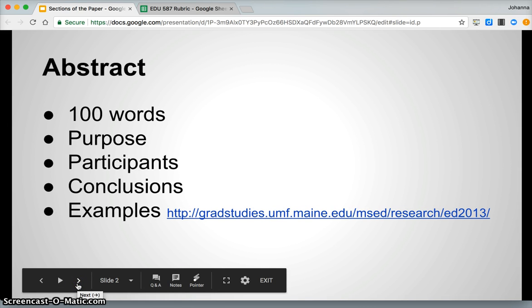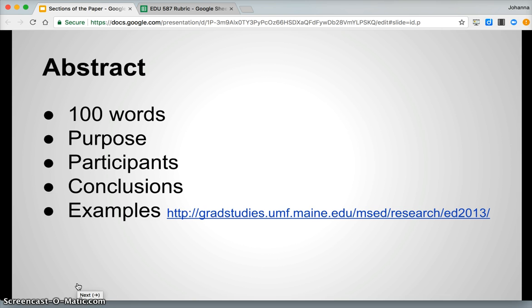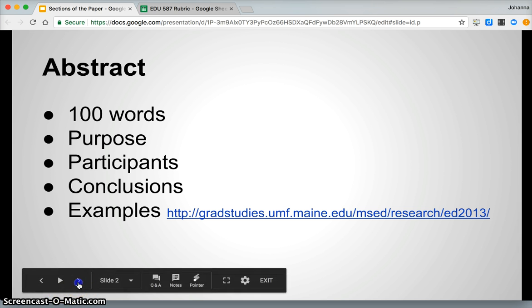The part that will show up first in your paper but will actually write last this semester is the abstract. It's just 100 words and in it you're going to include the purpose, participants, conclusions, and you can take a look at some examples if you would like.